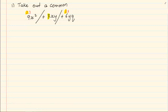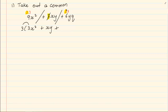So when we are taking out a common, we take out what is the same in each term. So we have three, open brackets. In the bracket we write down what is left if we had taken out the three. So in the first one we've got three x squared. Now if you had to multiply to check, three times three gives me nine x squared. Then in the second term we take out the three so we are left with xy, plus in the last term we take out the three, so we are left with two yq.